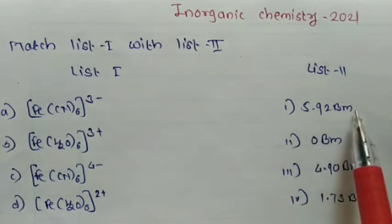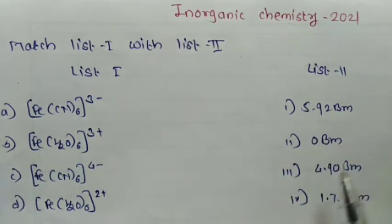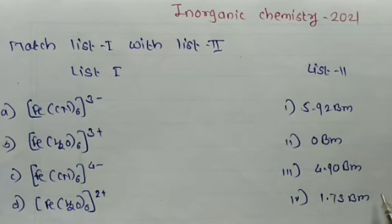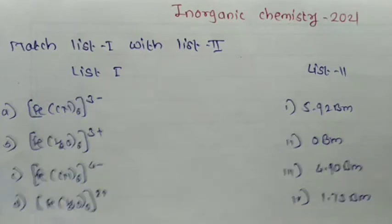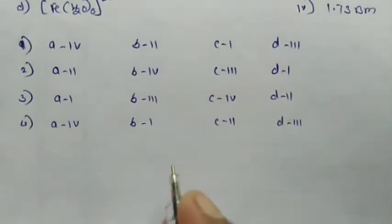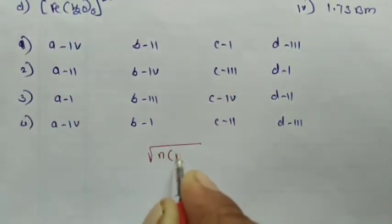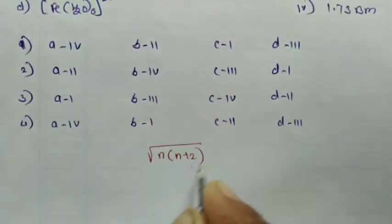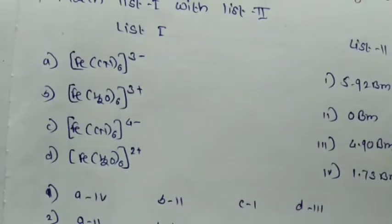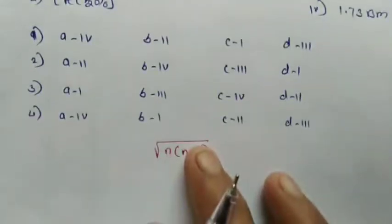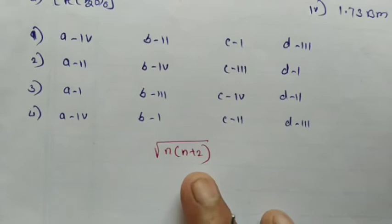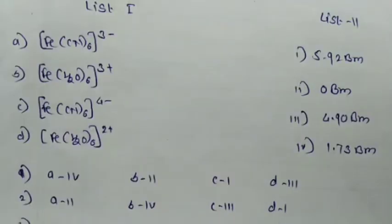The values given are 5.92 BM, 0 BM, 4.90 BM, and 1.73 BM. We know that the spin magnetic moment of any complex is calculated by the formula: square root of n(n+2). We need to find the spin magnetic moment of each complex using this rule and match the pairs.